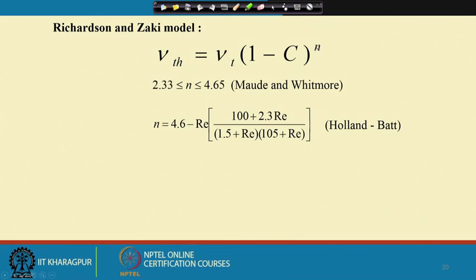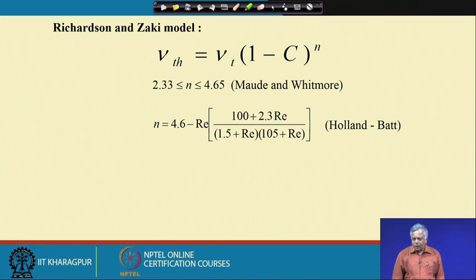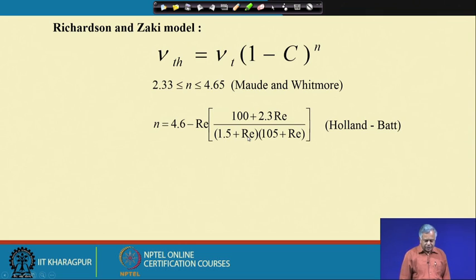Different researchers have given different values for n. Maud and Whitmore proposed that n lies between 2.33 and 4.65. For a specific system, the value of n must be determined experimentally. In the mineral processing literature, Hall and Bat proposed an empirical equation relating n to the Reynolds number (Re). This works well for mineral systems in many instances.